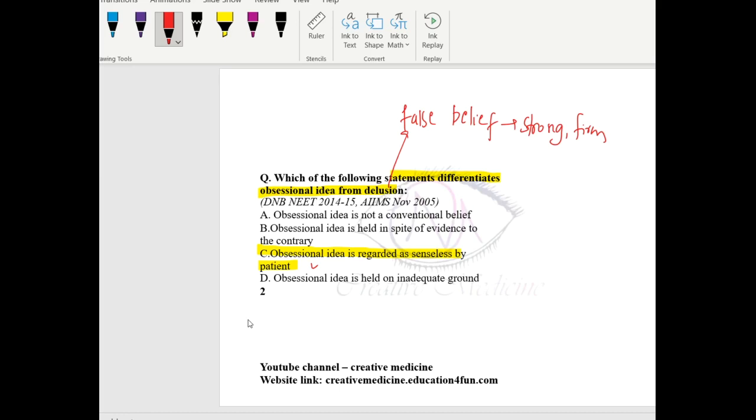So this is obsession. Whereas in delusion, if you take an example, delusion of infidelity. In delusion of infidelity, the patient believes that his wife is cheating on him, and this belief continues irrespective of what others say. Even if it is proved that his wife is not cheating and she is faithful to him, still this idea of delusion of infidelity is present in the patient.